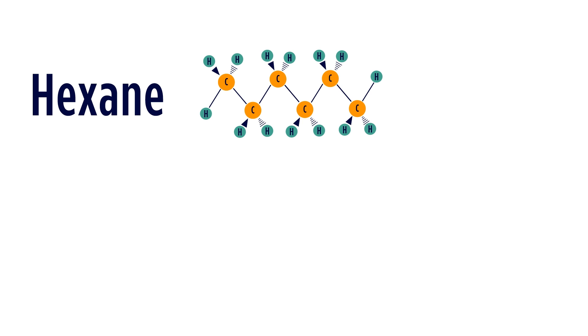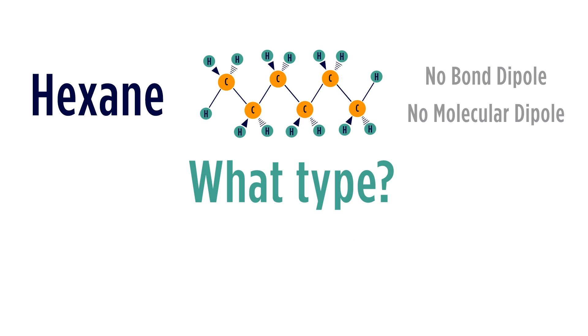If we look at hexane, here we just have carbon and hydrogen covalent bonds. We know that because of the electronegativity difference between carbon and hydrogen, these bonds are not polar. So therefore this molecule does not have any bond dipoles, and therefore the molecule does not have a molecular dipole. What type of intermolecular forces would hexane have? Well, without ions, hydrogen bonding, or dipoles, what is left is London dispersion forces.